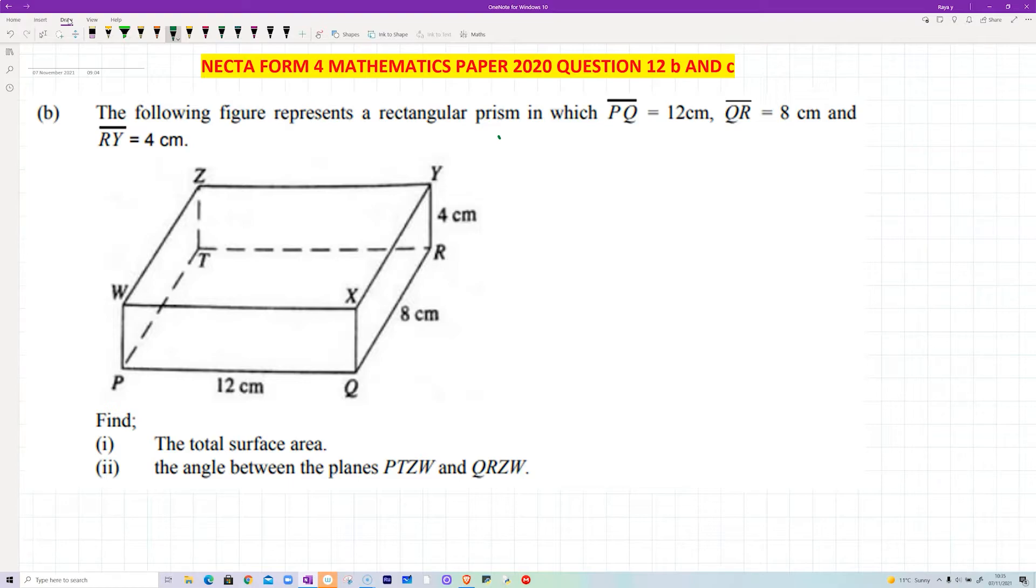We are told the following figure represents a rectangular prism in which PQ is 12, QR is 8, and RT is 4 cm. We're asked to find the total surface area of this prism and then we're asked to find the angle between the planes PTZW and QRZW. So let's start with that.